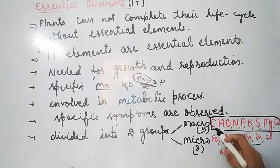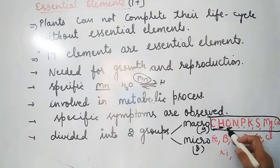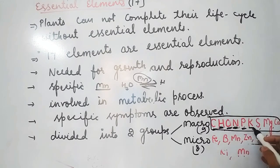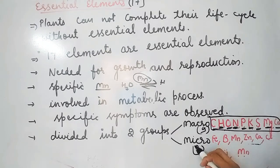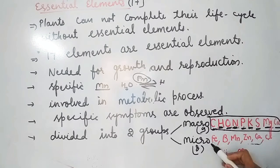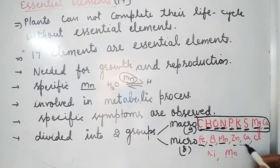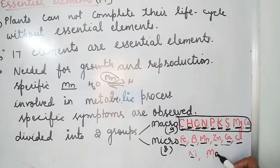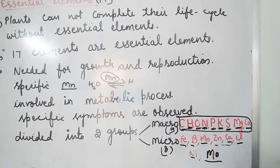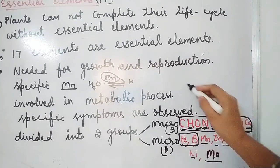The 9 Macro Essential Elements are: Carbon, Hydrogen, Oxygen, Nitrogen, Phosphorus, Potassium, Sulphur, Magnesium, and Calcium. The 8 Micro Essential Elements, required in trace amounts, are: Iron, Boron, Manganese, Zinc, Copper, Chlorine, Molybdenum, and Nickel.